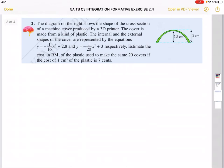The diagram on the right shows the shape of the cross-section of a machine cover produced by a 3D printer. The cover is made from a kind of plastic. The internal and external shapes of the cover are represented by these two functions. The first function is the lower one, the internal; the external is the one above, the one outside. Estimate the cost to make 20 covers if the cost for one cm³ of plastic is 7 cents. So we need to use volume and we're going to rotate 360 degrees above the y-axis.